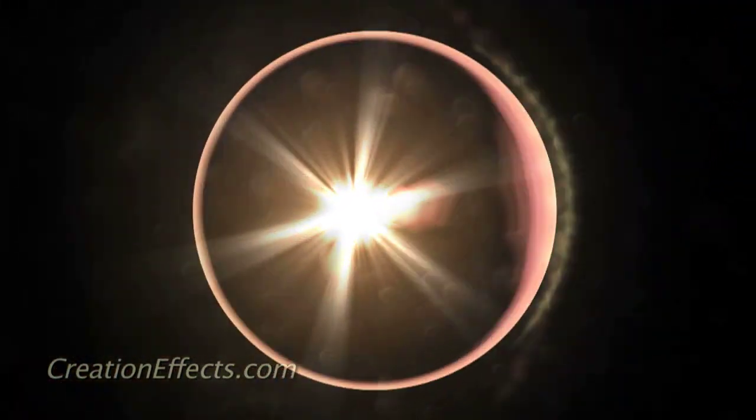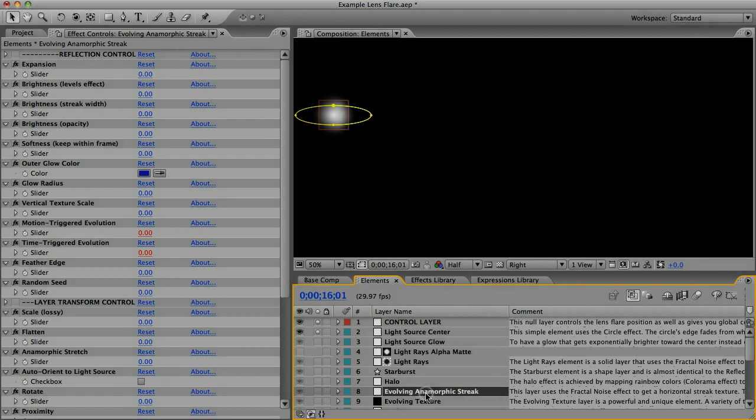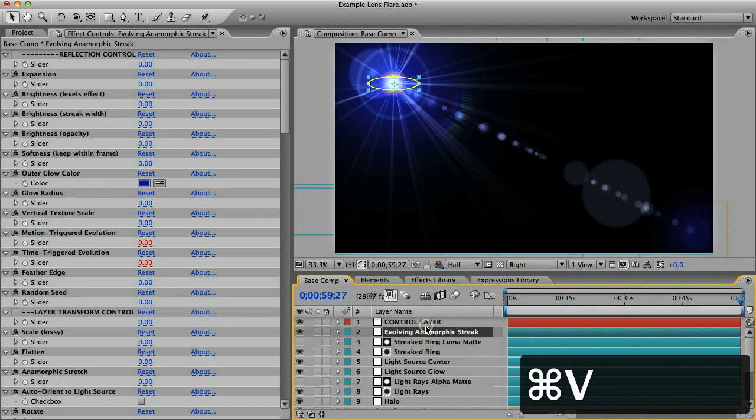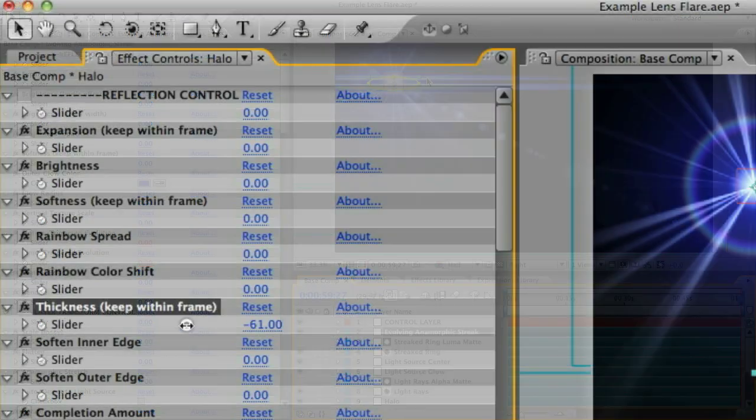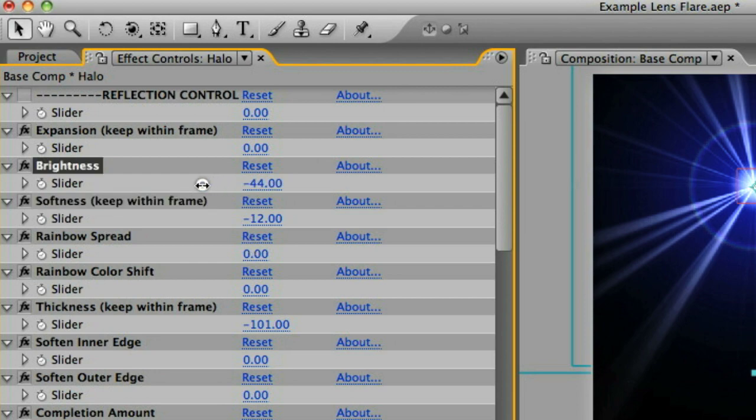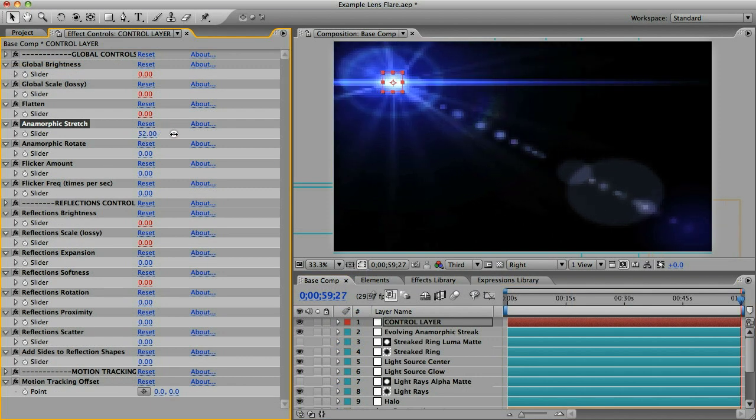You can also create your own custom lens flare, and it's as easy as just adding pre-programmed layers to a comp. You can customize the look and behavior of each individual layer, or lens flare element, using slider controls. You can also animate and adjust the look of the lens flare as a whole.